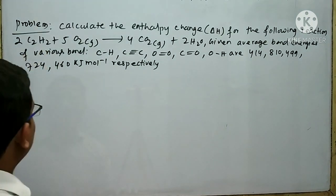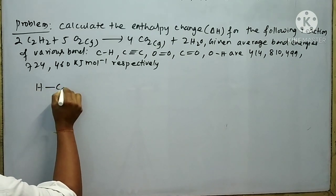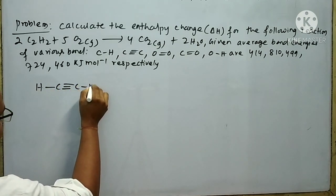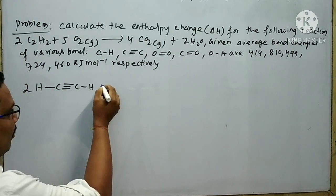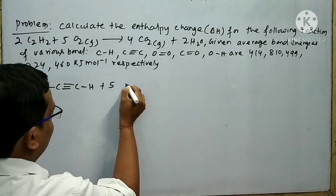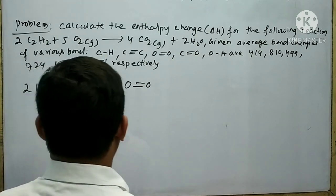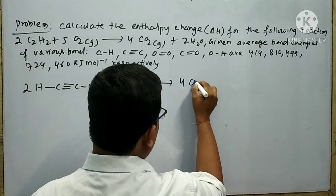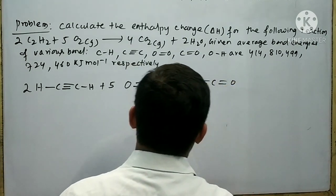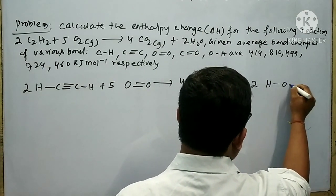The reaction contains C₂H₂, which is called ethyne. The structure of ethyne is drawn, and two molecules are taken. Next, we write 5 O=O for the oxygen molecule. Then we draw the structure of carbon dioxide: O=C=O. Finally, we draw the structure of the water molecule, which contains two O-H bonds.